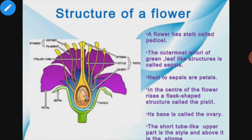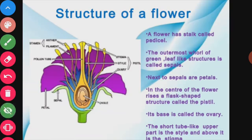The pedicel is the thin stalk of the flower by which the flower is attached to the branch of a plant. The thalamus is the uppermost part of the pedicel — the swollen uppermost part of the pedicel — and it carries the four whorls of the flower: sepals, petals, stamens, and carpel.